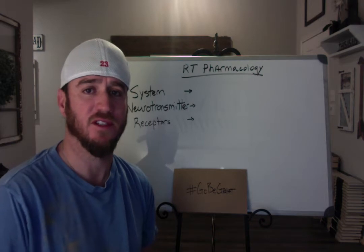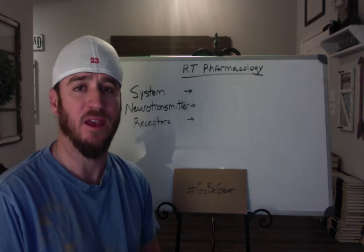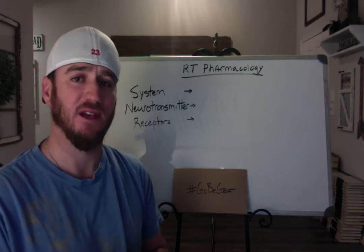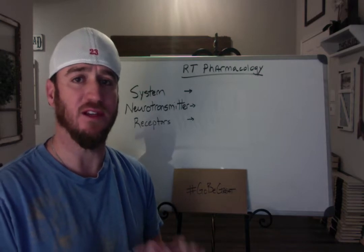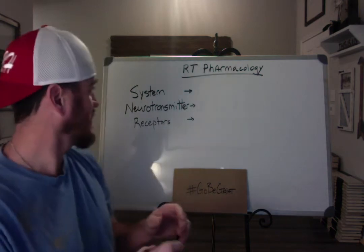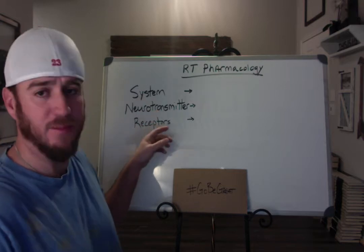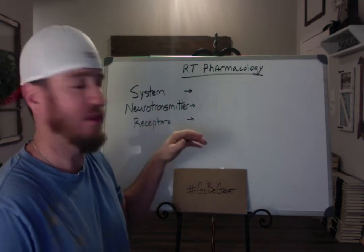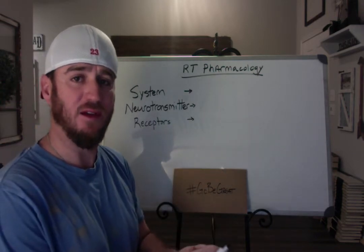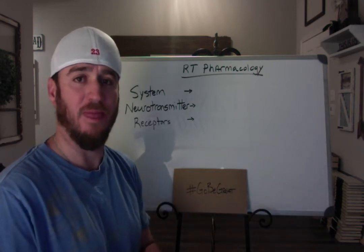When you're studying your drugs, especially these classifications of drugs, it's easiest if you break it down into three different segments. If you break it down into three different segments, it will help you recognize some of these drugs and the different names and classifications that they may fall under. You see up here I have system, neurotransmitter, and receptors. If you recognize that all of these terms mean the same thing, it'll point you in the right direction of knowing which drugs we're talking about and why we would give them.